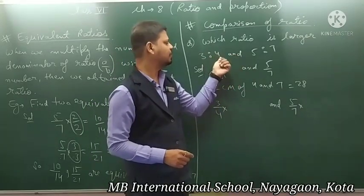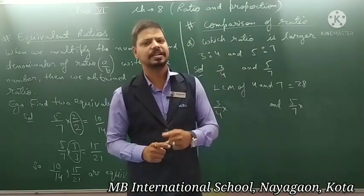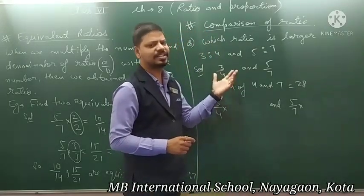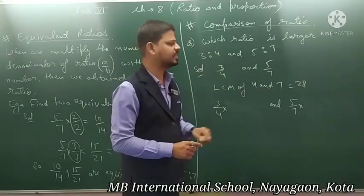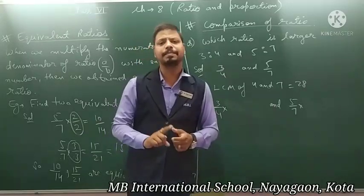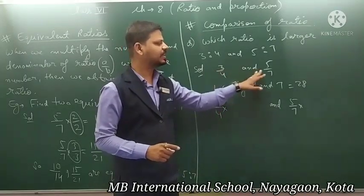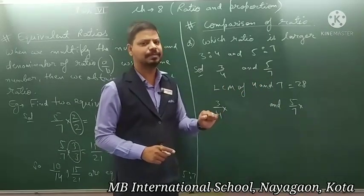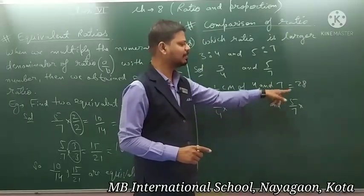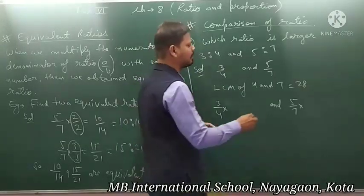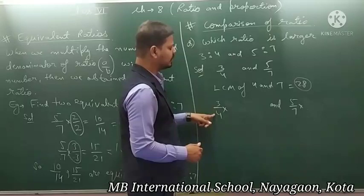Jab aap ratio ko compare karenge, toh aap inko fraction ki form mein dekh sakte hain. That is 3 ratio 4 ko likhte hain 3 upon 4, and 5 ratio 7 ko likhte hain 5 upon 7. Ab yeh fraction mein convert honge. Aapko batana hai which fraction is greater, means which ratio is greater. To pehle fraction ki form mein likh diya. Ab aap compare kar paaoge jab dono ratio ke denominator same honge. Denominator same karne ka method hai LCM. So first of all we take LCM of denominators 4 aur 7 — LCM aayega 28.